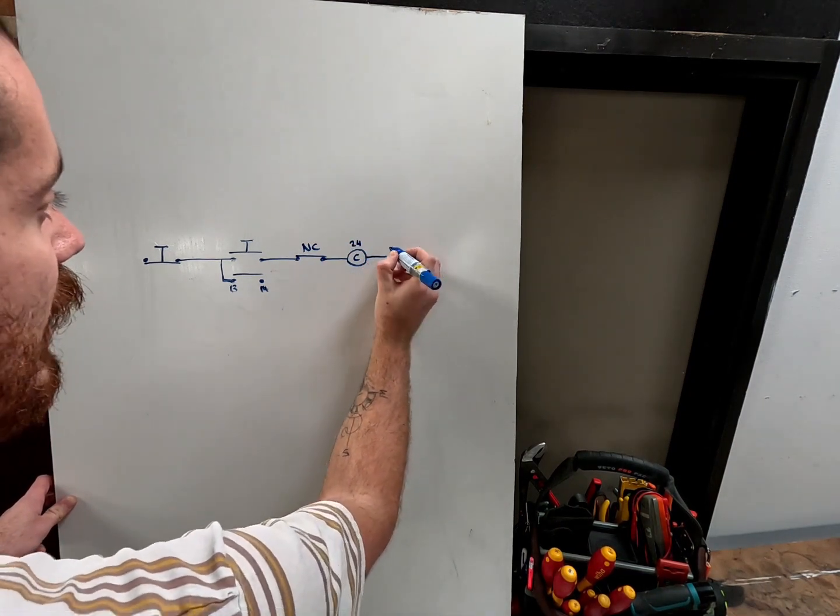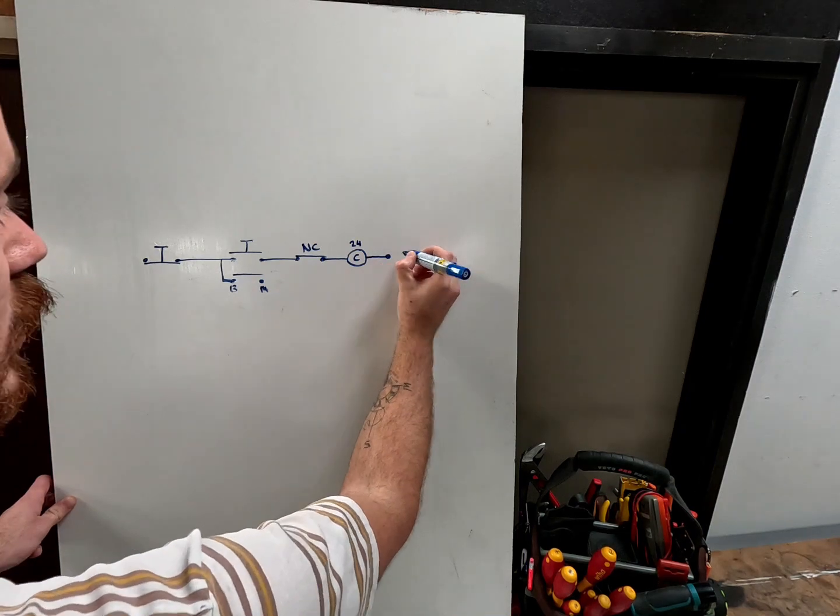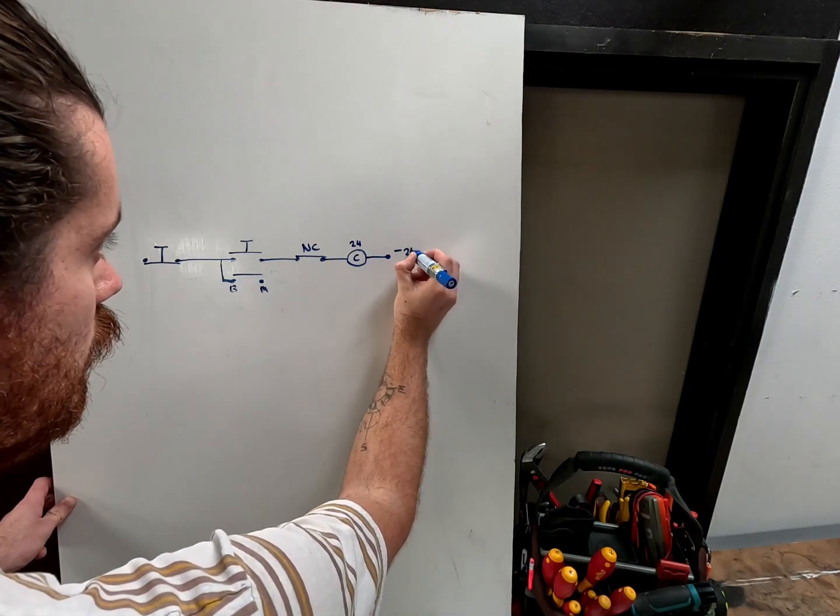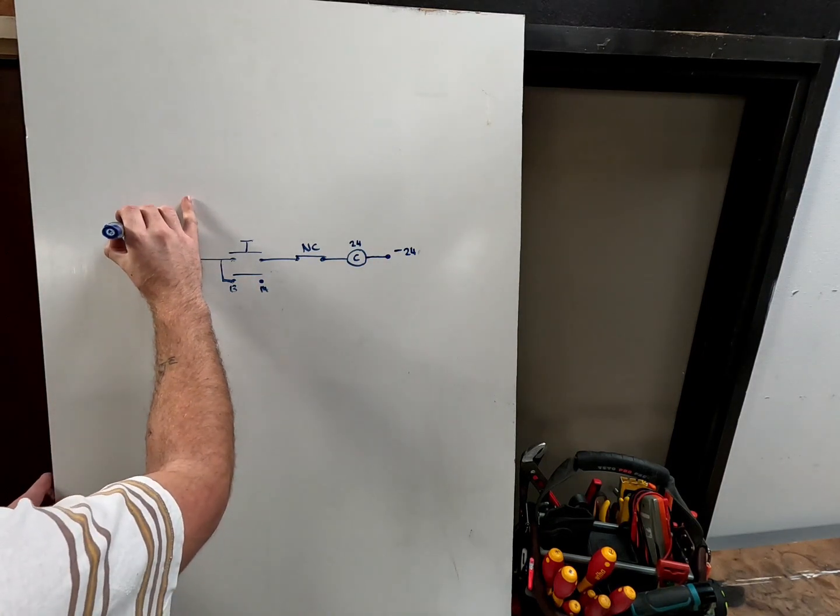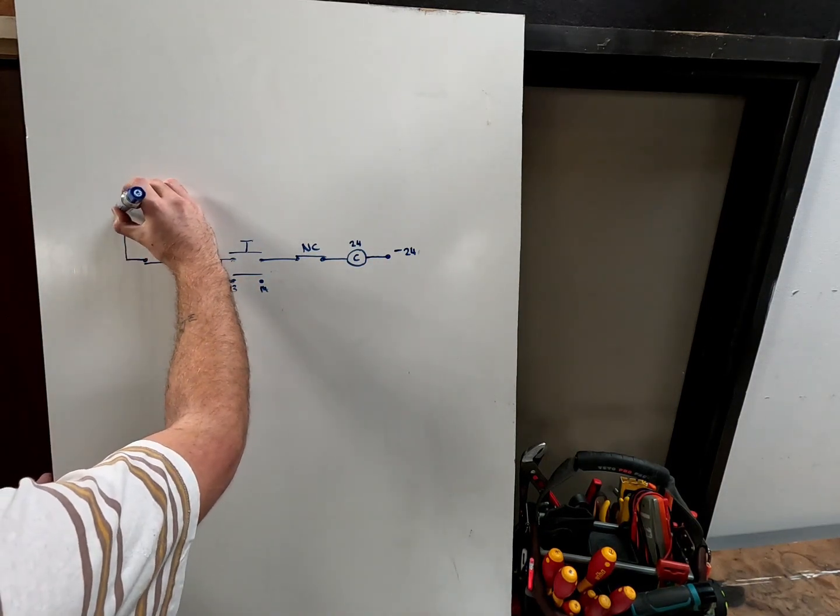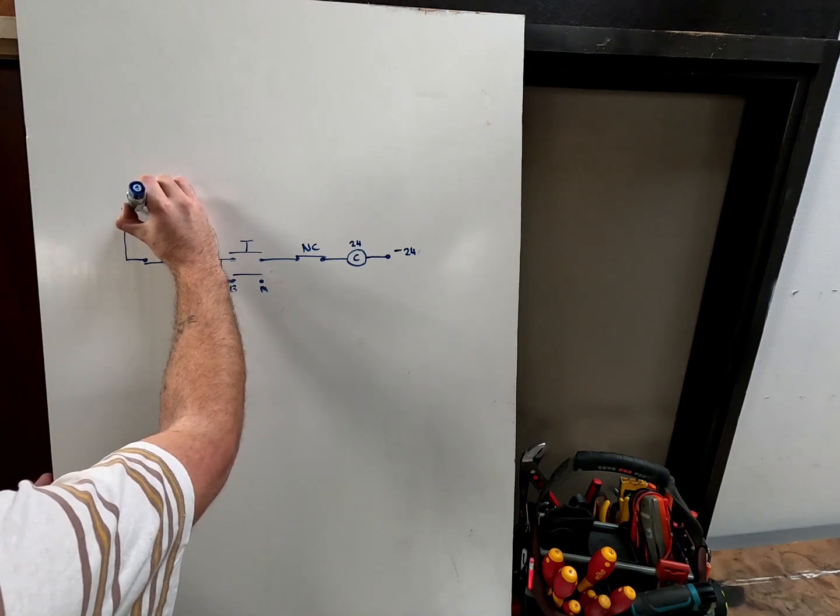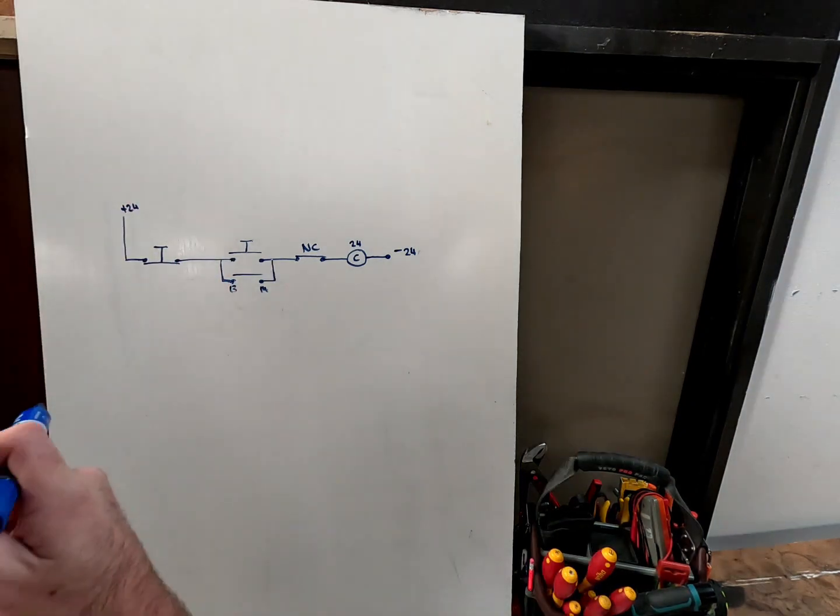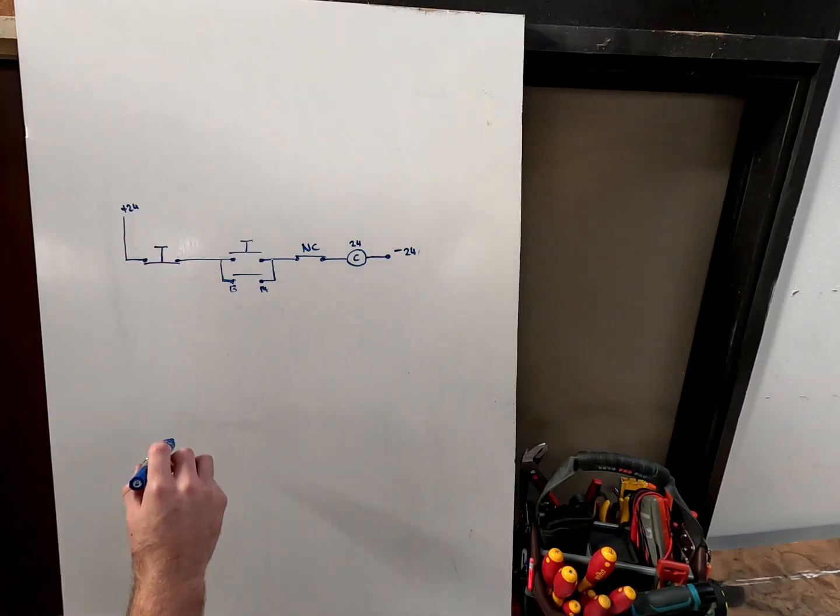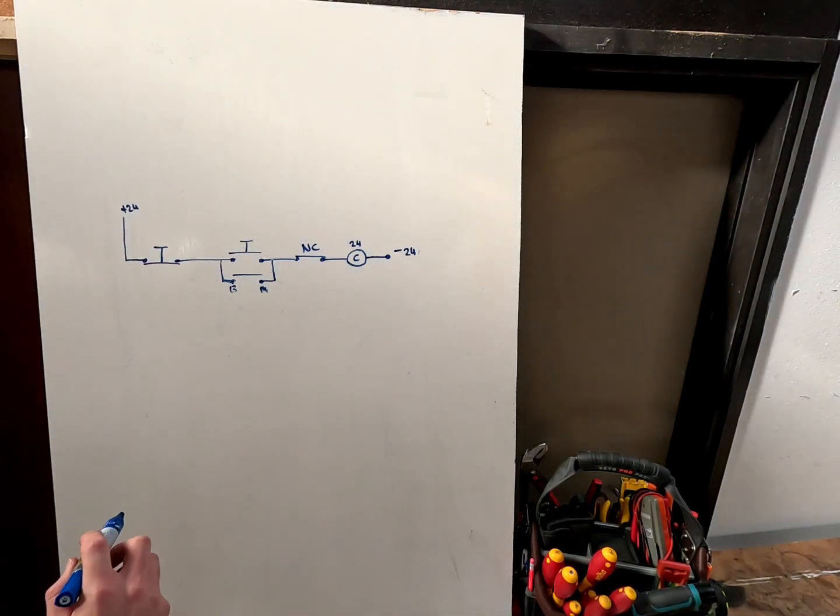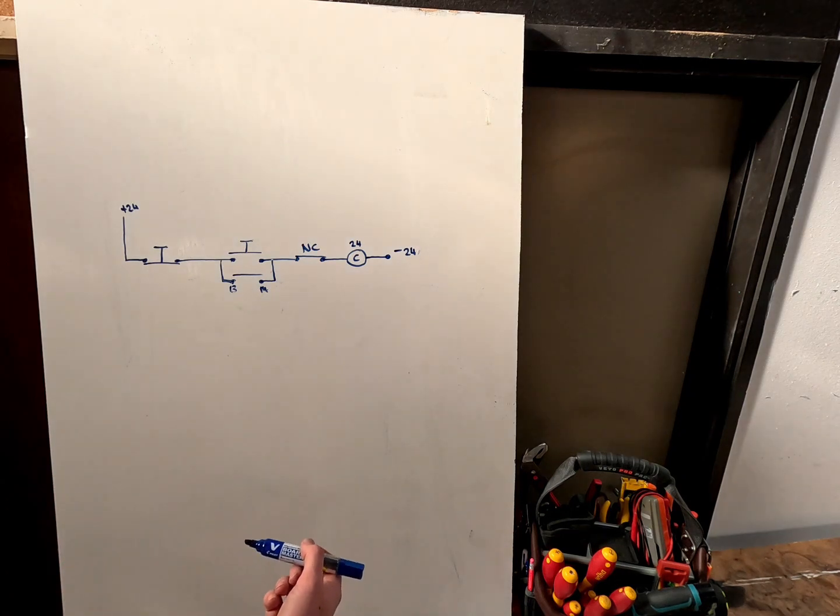Then that will end up going back to the negative of the 24. And this start here will go up to the switchboard and that will be the positive of the 24 volt. I'm just going to copy this another two times for the 230 and the 400 volt. And then after that, we'll draw in the changeover contact controls.